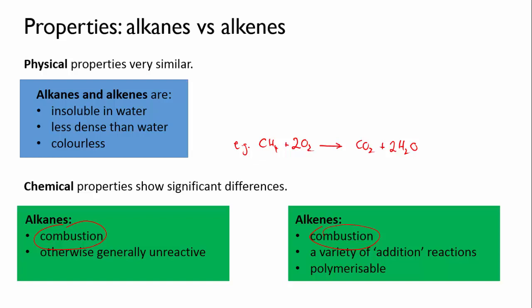Alkenes, on the other hand, have this carbon-carbon double bond. The second bond in the double bond is not as strong as the first, which means that alkenes are able to undergo a number of reactions that involve breaking that second bond and adding something new onto the molecule. For this reason, these reactions are called addition reactions. Alkenes are also polymerizable. They can be turned into polymers. Again, it's because of that less stable second bond that can be joined together in long strings to give polymers.